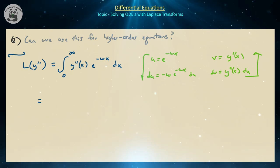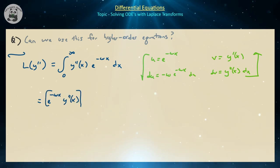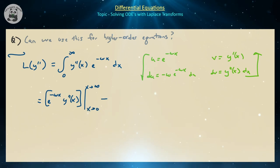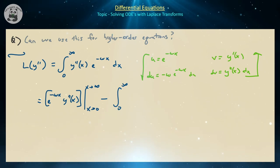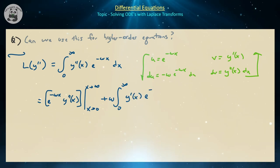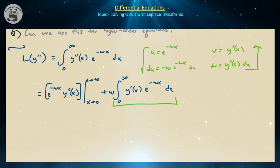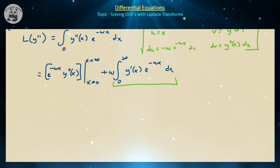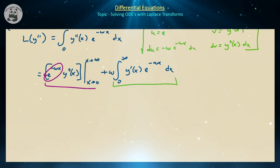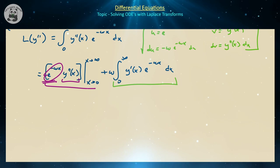Applying integration by parts gives uv — that is e to the minus omega x times y prime of x — evaluated from 0 to infinity, minus the integral from 0 to infinity of v du. The right-hand side integral is just the Laplace transform of y prime, which we already know. As x goes to infinity the exponential goes to 0; as x goes to 0 it goes to 1, leaving y prime of 0.